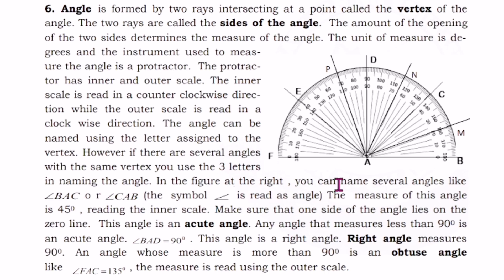In the figure at the right, you can name several angles like angle BAC or angle CAB, the symbol is read as angle. The measure of this angle is 45 degrees, reading the inner scale. Make sure that one side of the angle lies on the zero line.